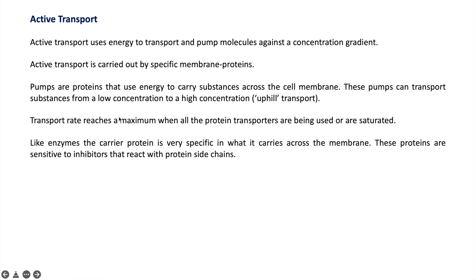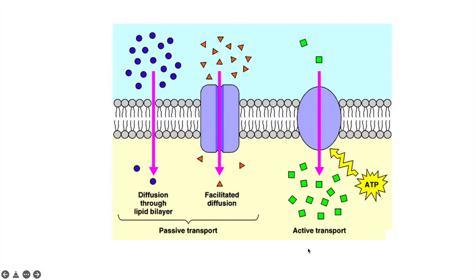Whenever these transport proteins get saturated with a substance, the transportation mechanism stops. Since proteins act like enzymes, if inhibitors are given that inhibit the protein, the transport mechanism also stops. These proteins are very specific in nature and carry only specific types of substances from low concentration to higher concentration. In the figure, you can see the difference between all three transportation mechanisms — the first being diffusion.